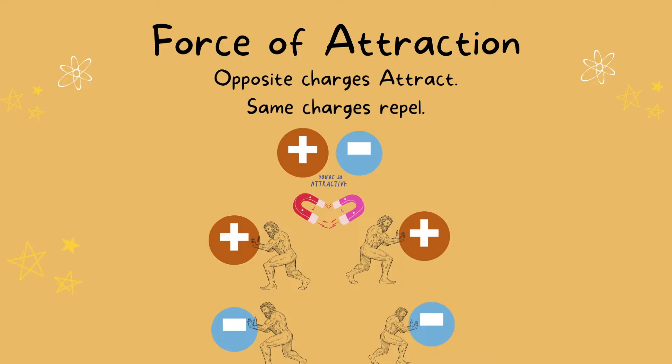You can think of the proton in the center of the nucleus like a magnet, and it wants to grab the electron and bring it close to the nucleus. It would make sense to say that the closer an object is to the magnet, the better hold the magnet will have on it.